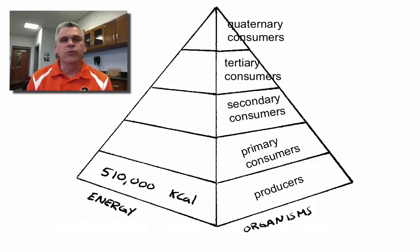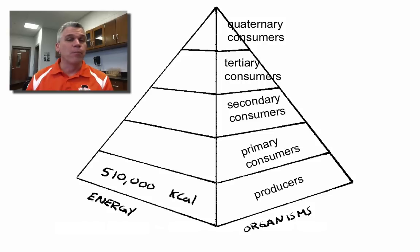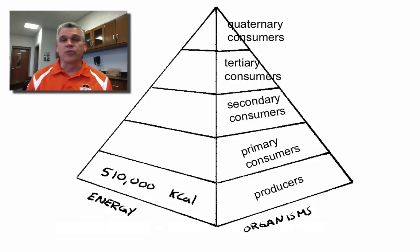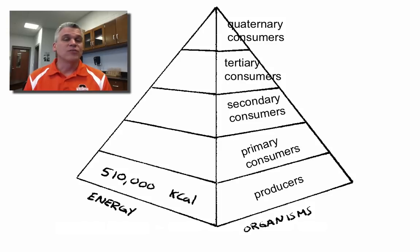Notice that as we increase these trophic levels, the area of each level decreases. In an ecosystem, there are going to be much fewer quaternary consumers than tertiary consumers, and certainly a lot more primary consumers than secondary consumers. The greatest number of organisms in an ecosystem are the producers. Let's look at this in terms of energy. Let's say that in a small ecosystem, about 510,000 kilocalories of energy is absorbed by the producers.